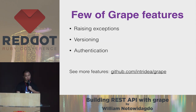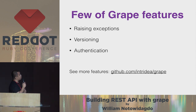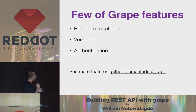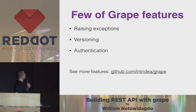A few of GRIB features I'd like to present today — only three features, but there are a lot more features of GRIB that you can see on GitHub. The first is raising exceptions, versioning, and authentication.